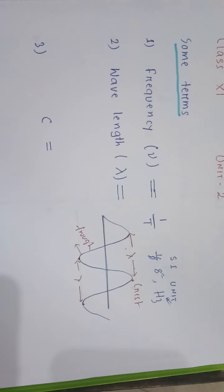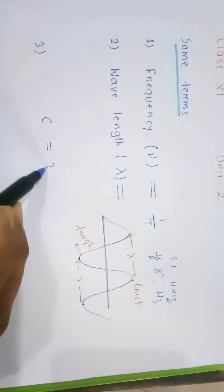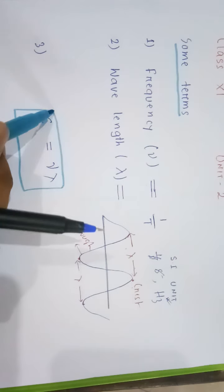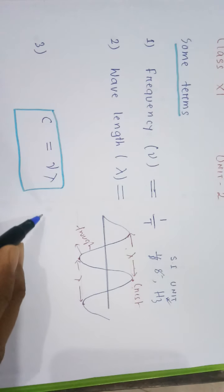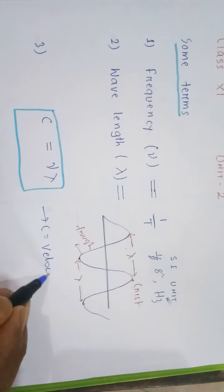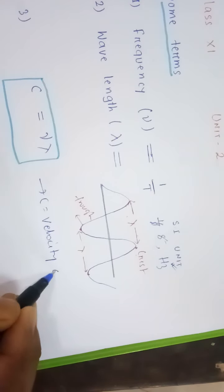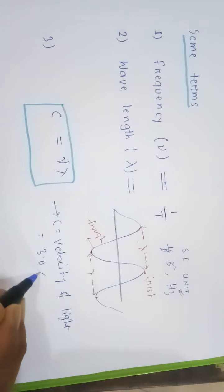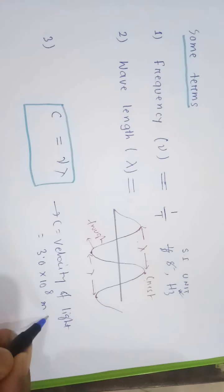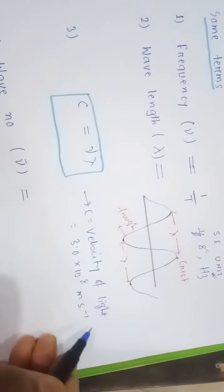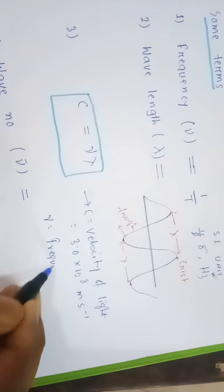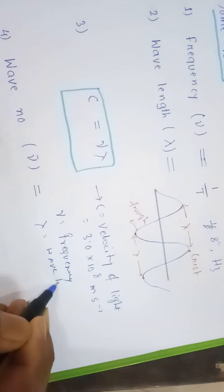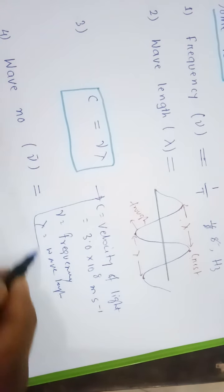So wavelength is the distance between two crests or two troughs. Next, the important formula is C equal to Nu lambda. Try to remember this. C is the velocity of light, equal to 3.0 times 10 to the power 8 metres per second. Nu is the frequency and lambda is the wavelength.